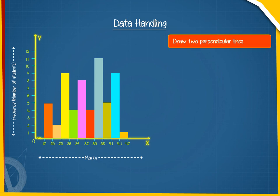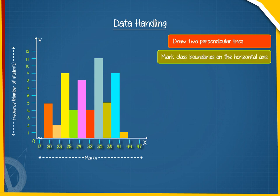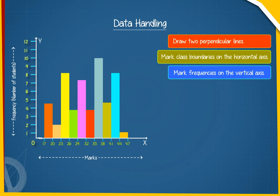Draw two perpendicular lines. Mark class boundaries on the horizontal axis. Mark frequencies on the vertical axis.